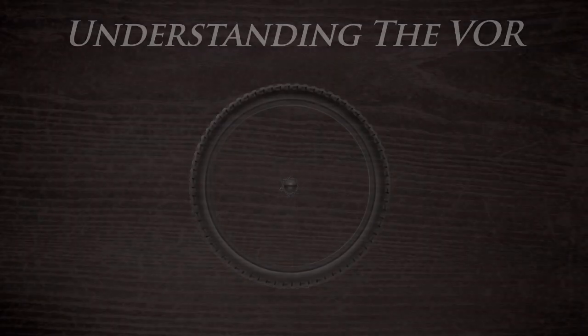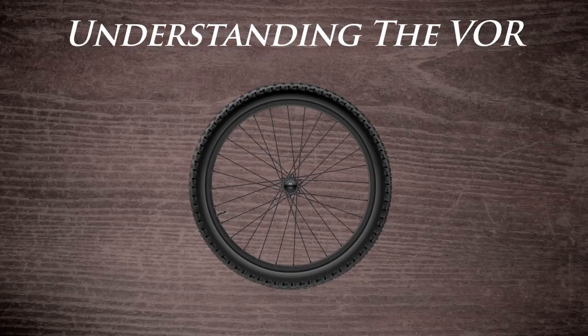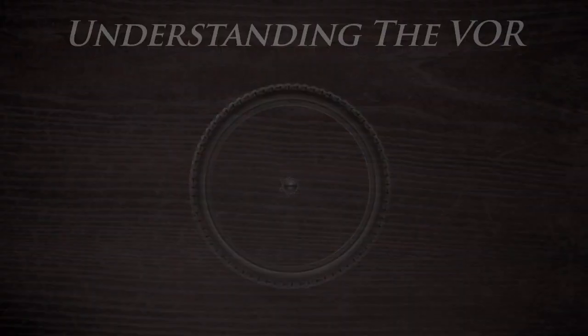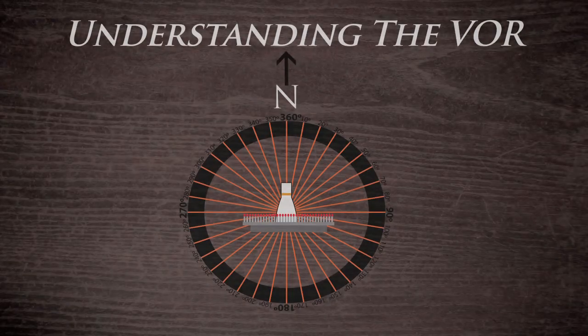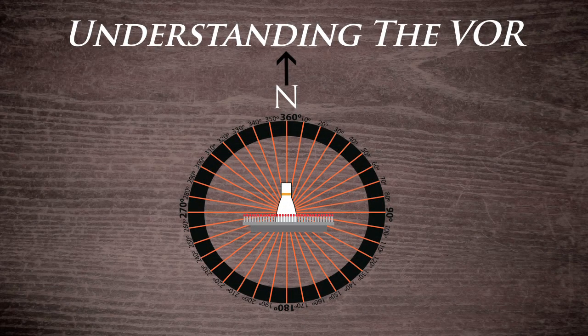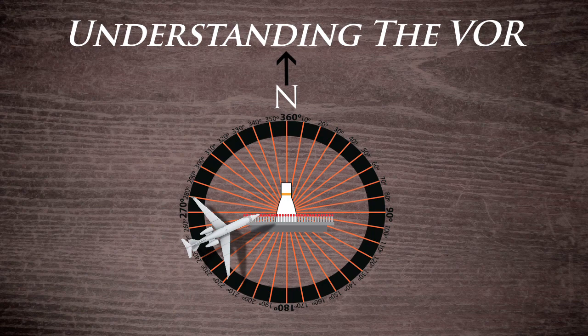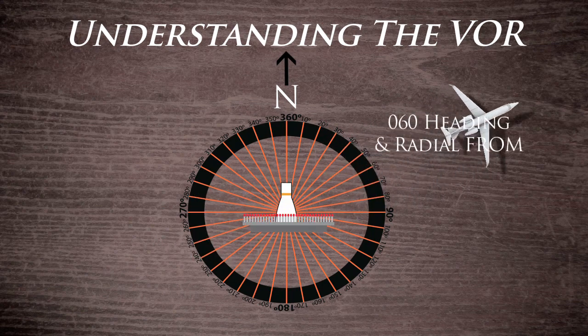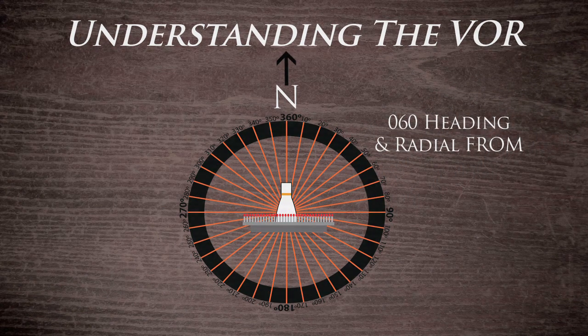When visualizing a VOR, think of a bicycle wheel. Each radial is a heading from the station, so when you fly over the VOR and track a radial from the station, you are essentially tracking a heading away from the station.